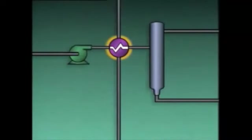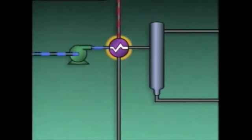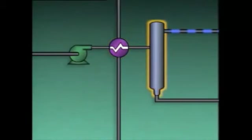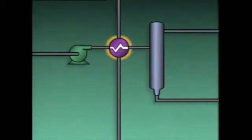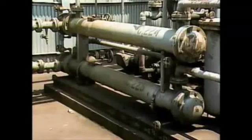In this system, the heat exchanger is used as a heater. The process liquid that's pumped through the heat exchanger tubes is heated by steam that flows through the shell side of the heat exchanger. The heated liquid is then sent to a process reactor. In the reactor, additional materials are mixed with the liquid and a chemical reaction occurs. By heating the process liquid, the heat exchanger enables the chemical reaction to take place more efficiently.